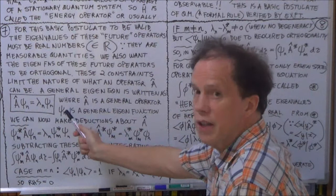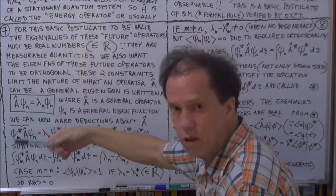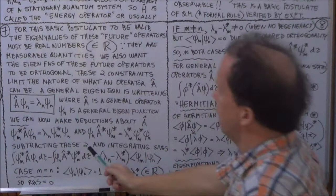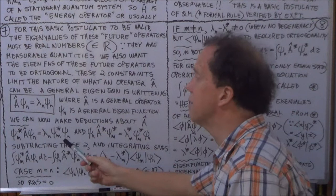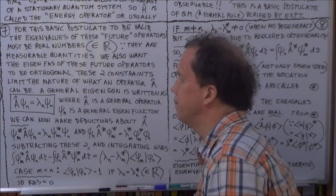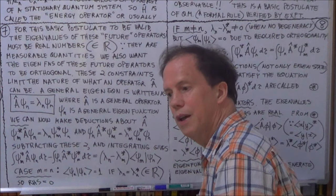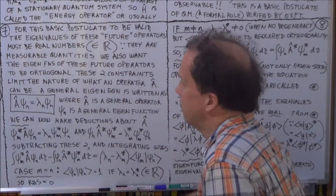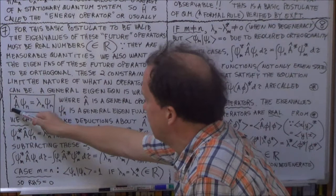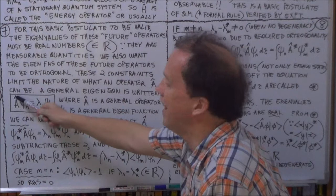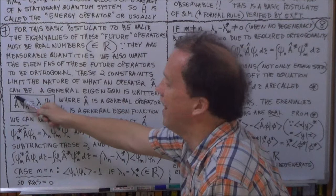Those two constraints in turn put constraints on the nature of the operator. The rest of the session addresses this. Let's start with the general eigenequation: A-hat is the operator corresponding to observable A. Multiply both sides on the left by psi_m-star — the conjugated form of an eigenfunction of this equation, where psi_m is different from psi_n. Since the eigenvalue is assumed to be a real number — just a scalar — it doesn't matter where you place it, so you get that expression.